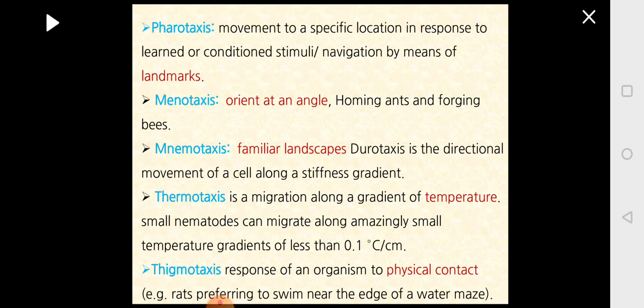Mnemotaxis involves following familiar landscapes. Thermotaxis is where temperature acts as the stimulus. Some forms like nematodes migrate and can sense very small temperature differences — as little as 0.1 degree centigrade per centimeter. They are so sensitive to temperature variation that they follow it. This is called thermotaxis.